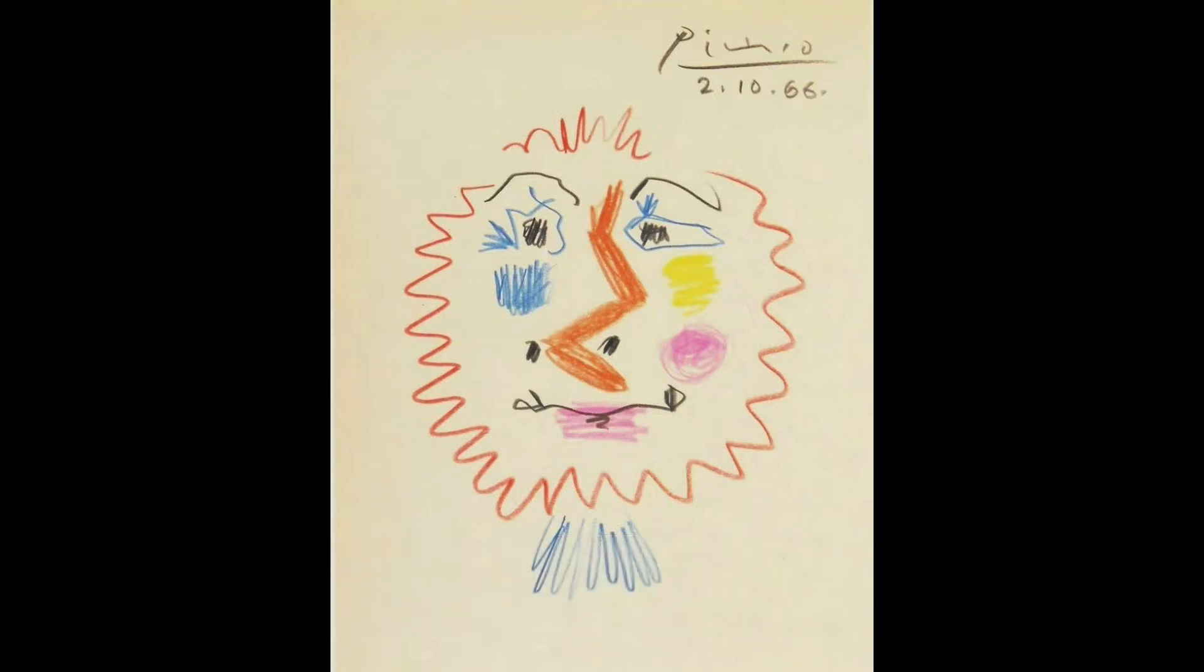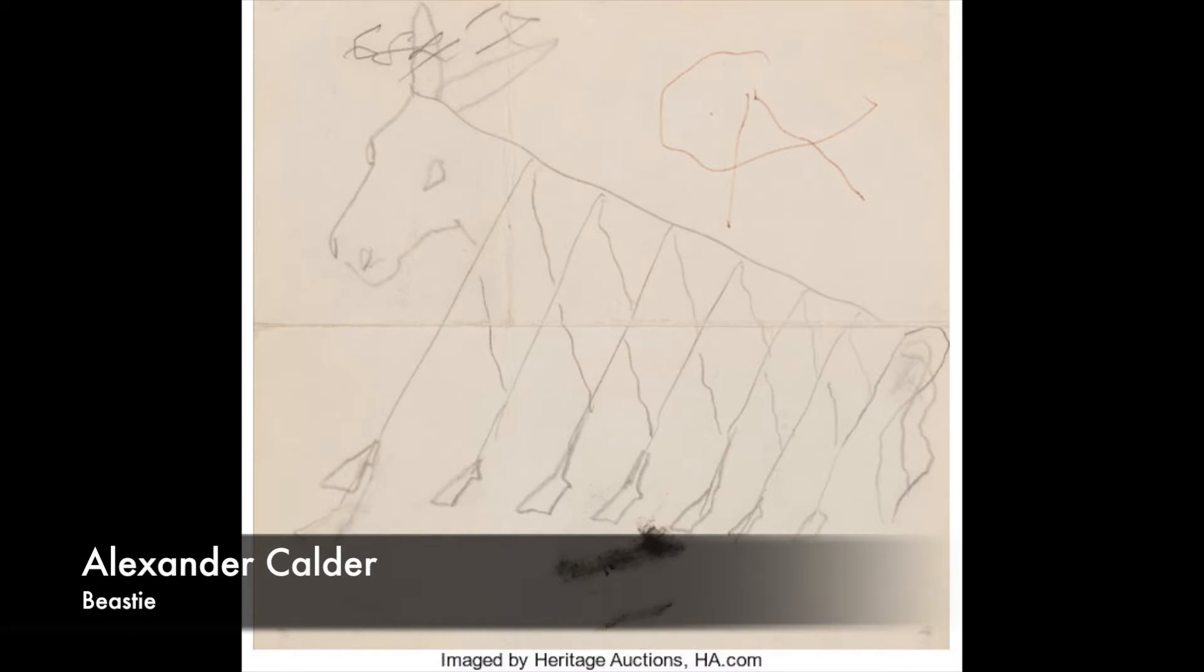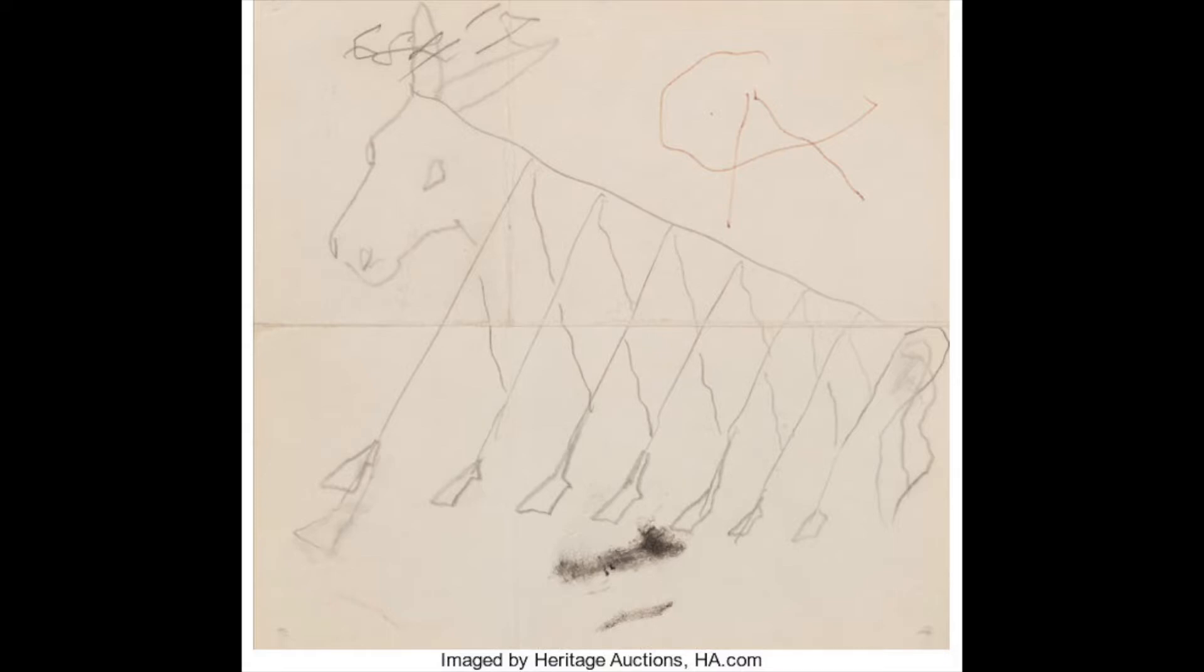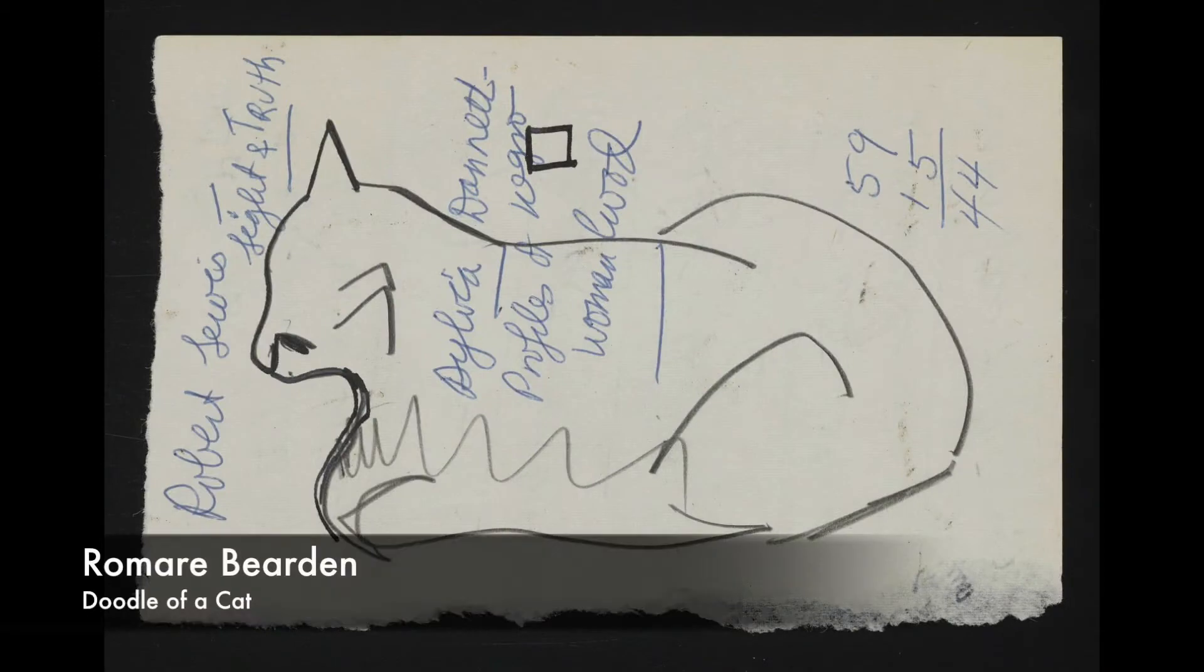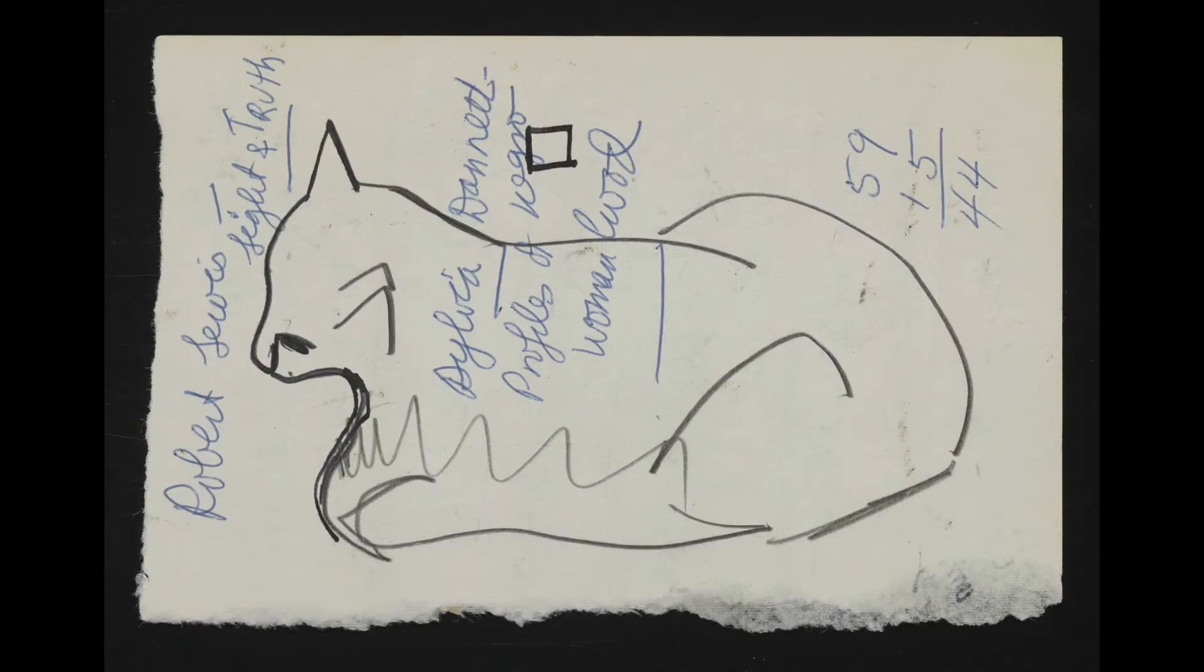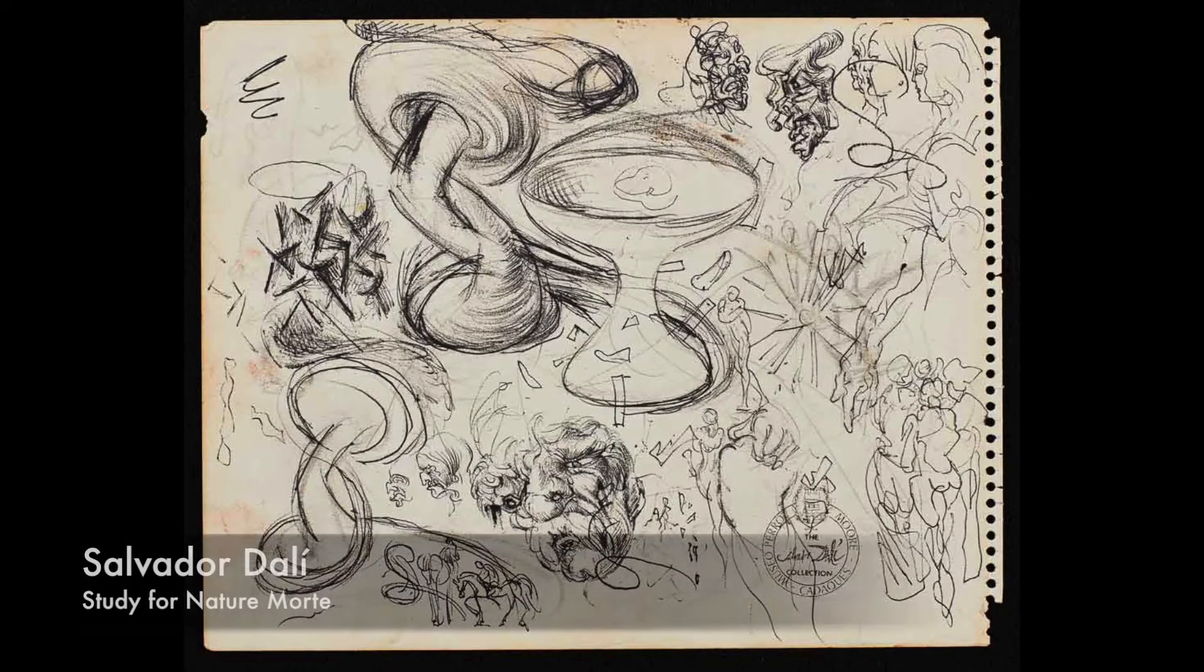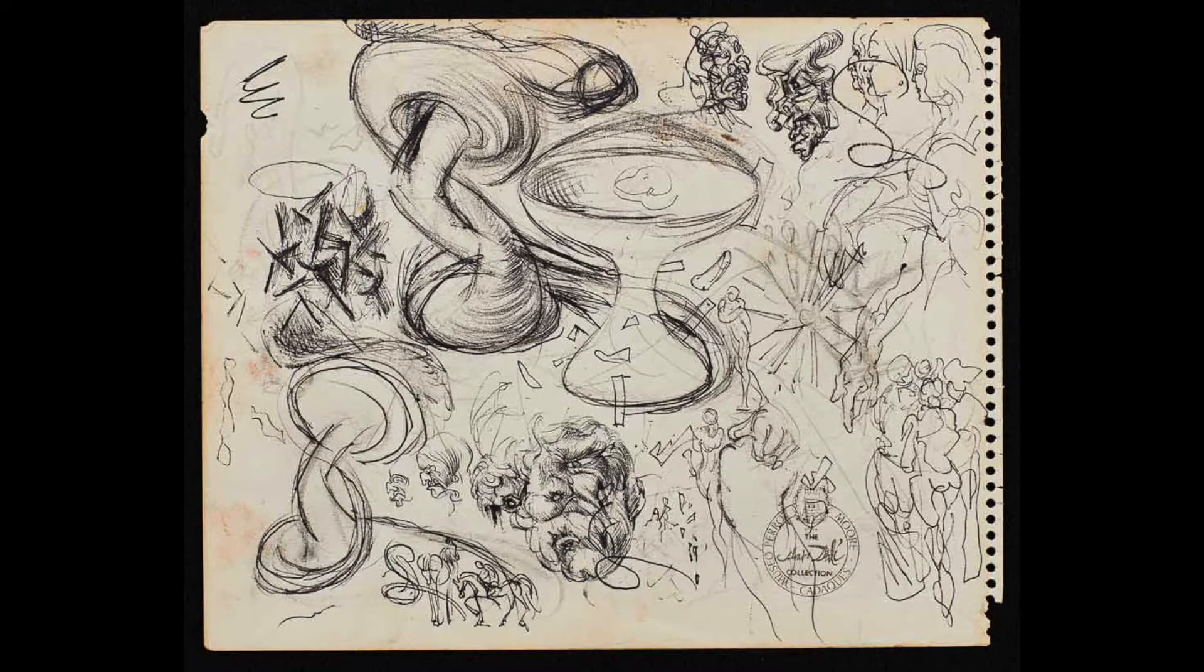Pablo Picasso made this doodle with colored pencil. You could buy it for $350. This doodle titled Beastie is made by Alexander Calder and you can see his initials on the top right corner. Calder is known for his mobiles and sculptures. Collage artist Romare Bearden made this quick doodle of a cat which is now part of the collection at the Smithsonian. This sketchbook page full of complicated and interesting doodles was made by the surrealist artist Salvador Dali.